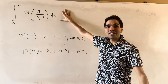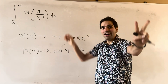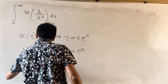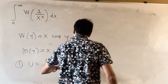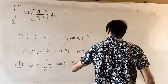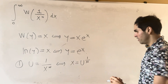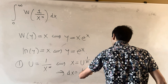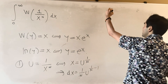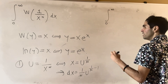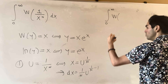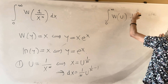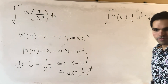We will solve this integral using not one substitution, not two, but three. Let's get started. Let u = 1/xⁿ. Then x = u^(1/n), since x is between zero and infinity, and this implies dx = (1/n)·u^(1/n − 1) du. Therefore our integral becomes the integral from zero to infinity of W(u) · (1/n)·u^(1/n − 1) du.